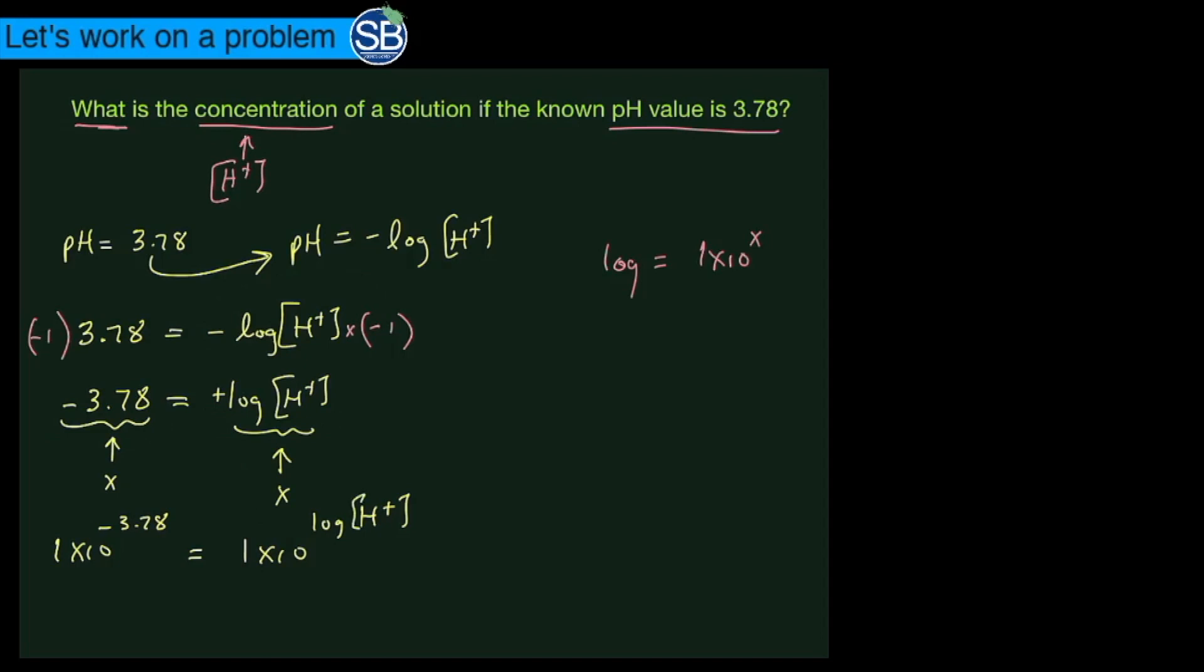On the right-hand side, this base and this log are going to cancel, and that's going to wind up giving you the hydrogen concentration on the right-hand side. On the left-hand side you would have 1 times 10 to the negative 3.78. Now for most classes this here would suffice and that would be the answer that you're looking for, but sometimes professors want you to give them an exact answer.